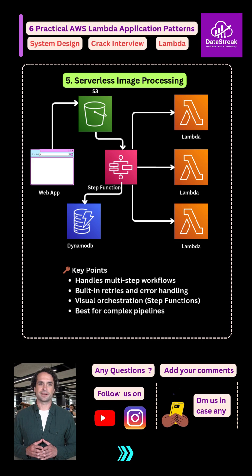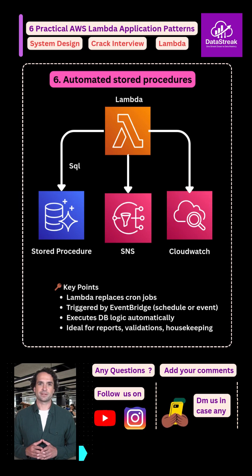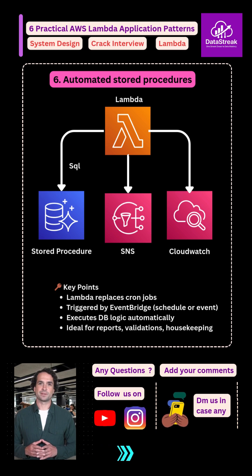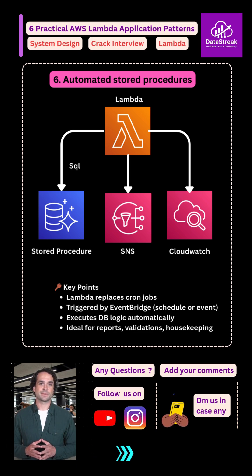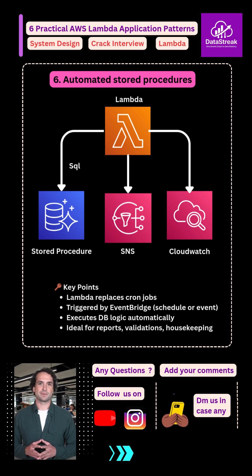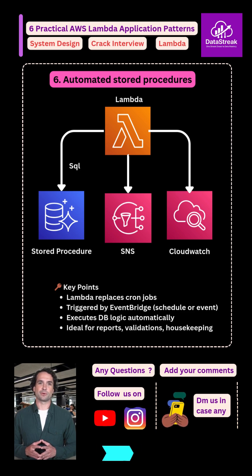Pattern 6: Automated stored procedures. Lambda executes database procedures, generates reports, and sends notifications. No manual jobs. That's how Lambda powers real production systems. Subscribe to Data Streak for more system design videos.